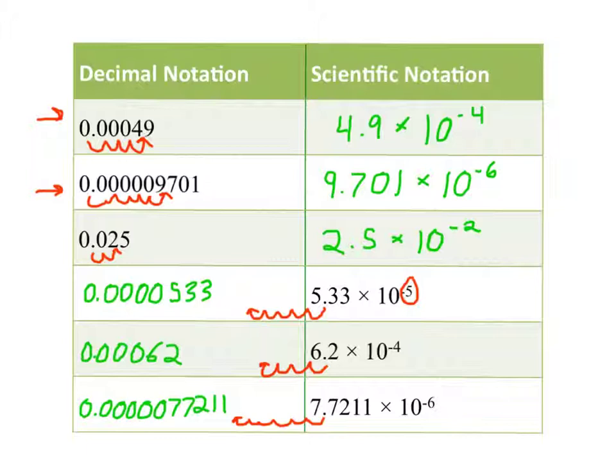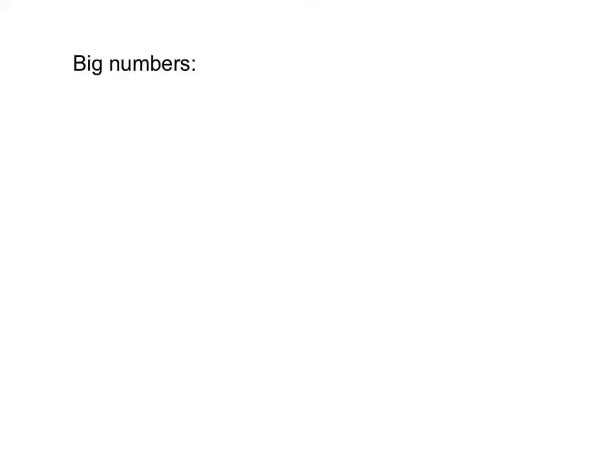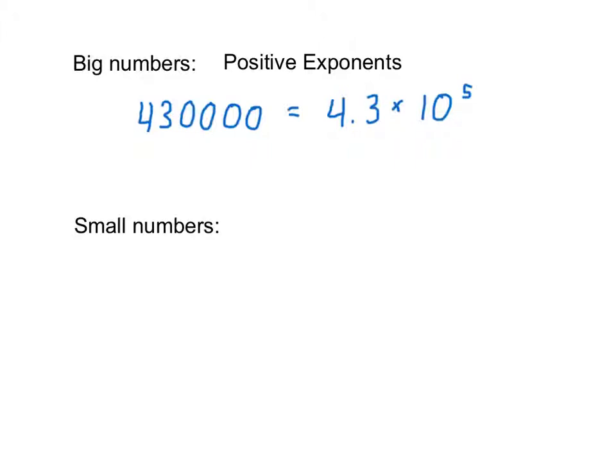So that's it for scientific and decimal notation for big and small numbers. The biggest problem that students will have is confusing negative and positive exponents. So pay attention to the sign. Big numbers have positive exponents. While small numbers have negative exponents.